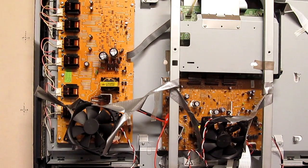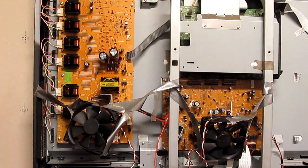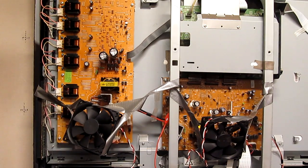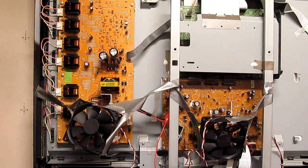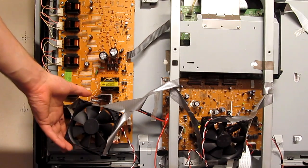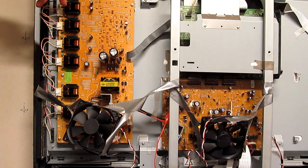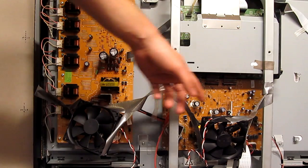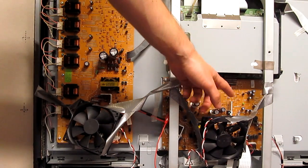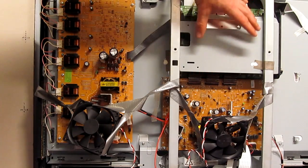After some experimentation with the age-old duct tape prototype technique, I've found a decent location for both of the fans. One here to direct air over this power supply board, including the vulnerable inverter transformers, and this fan to direct air over the second power supply and the processor board.